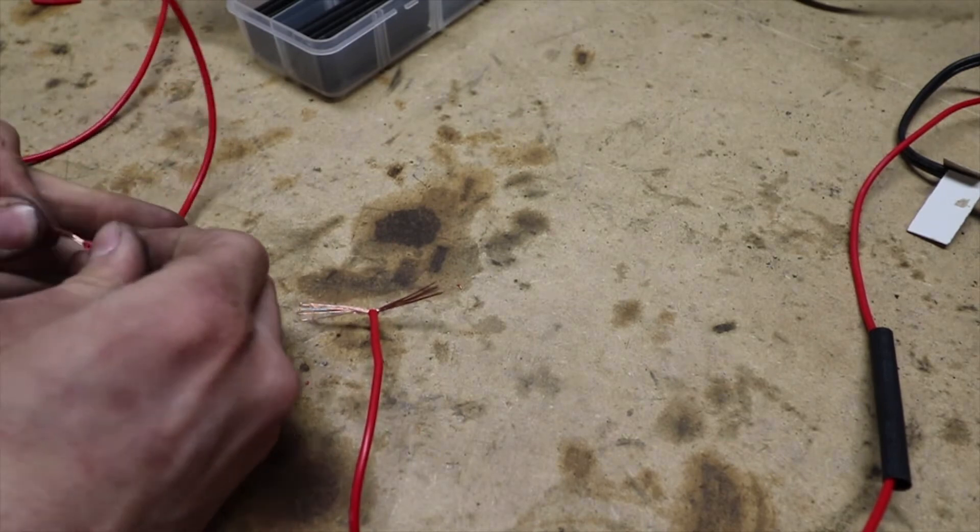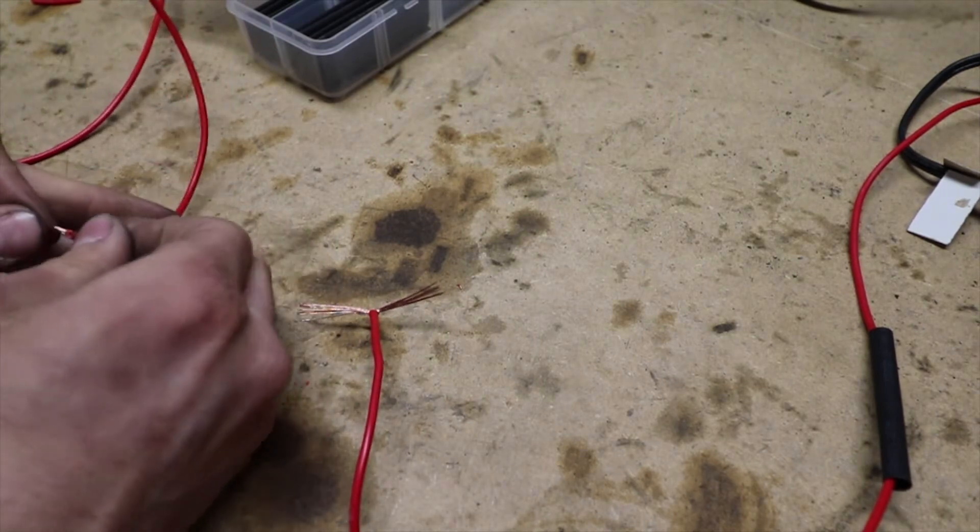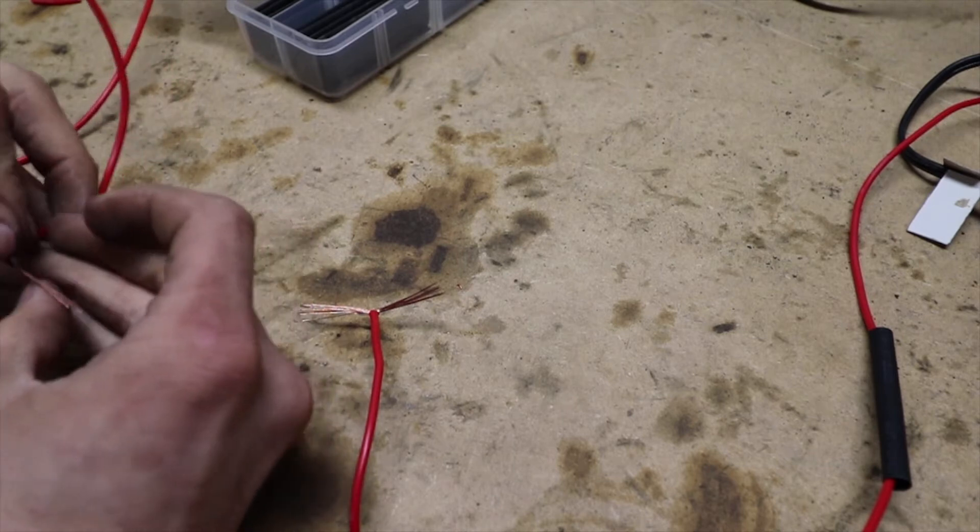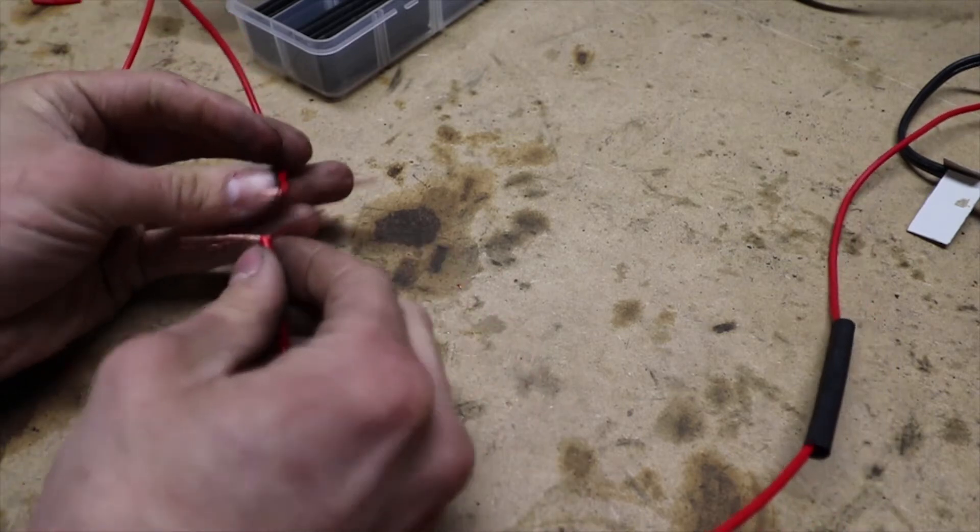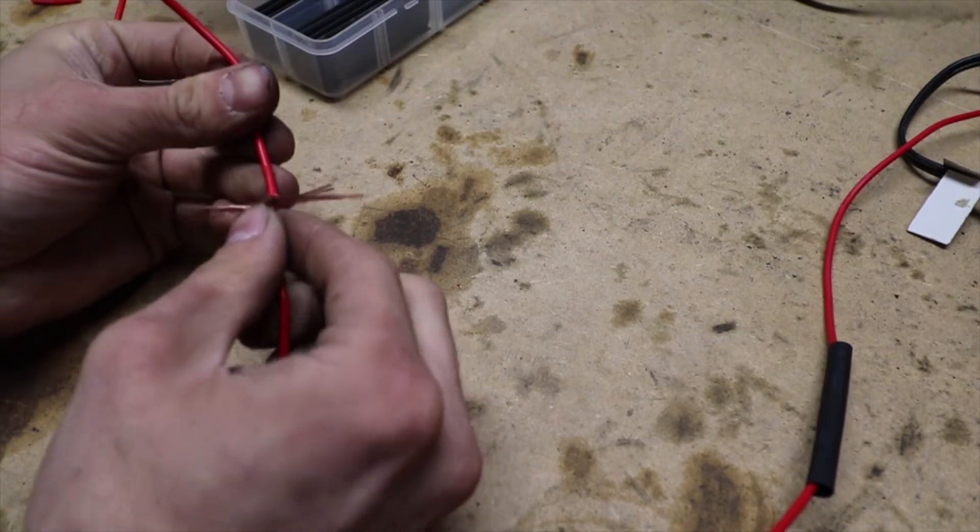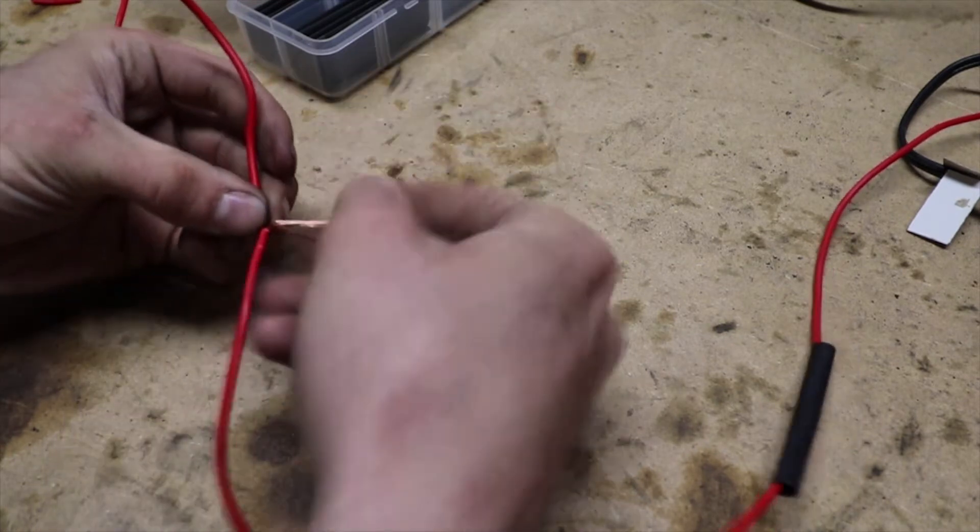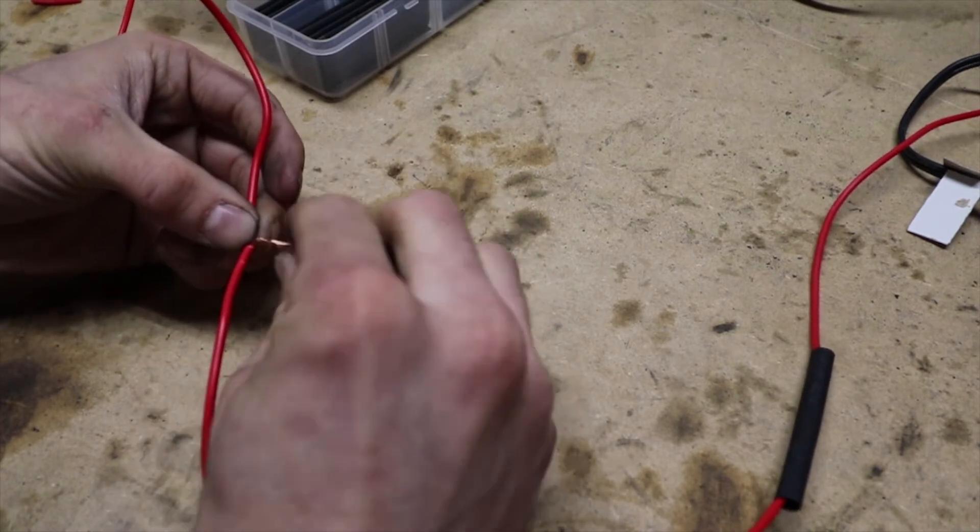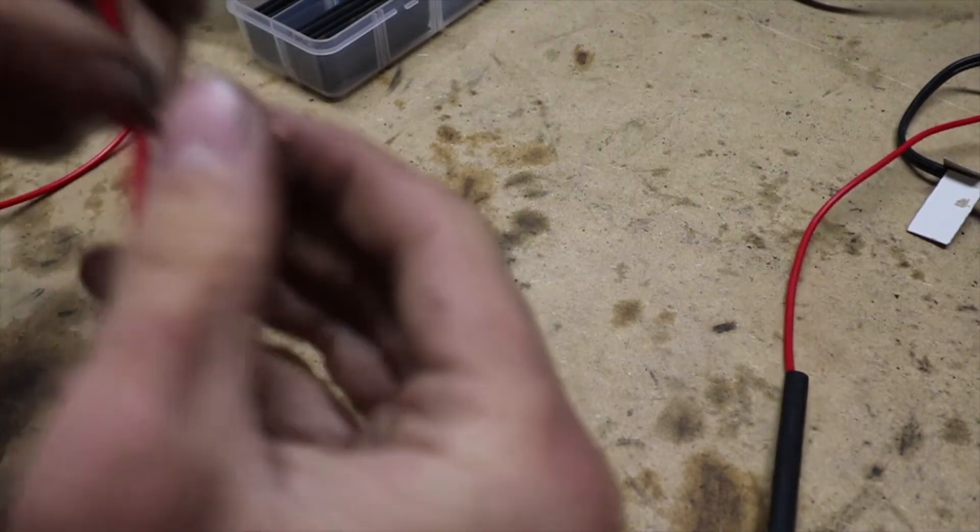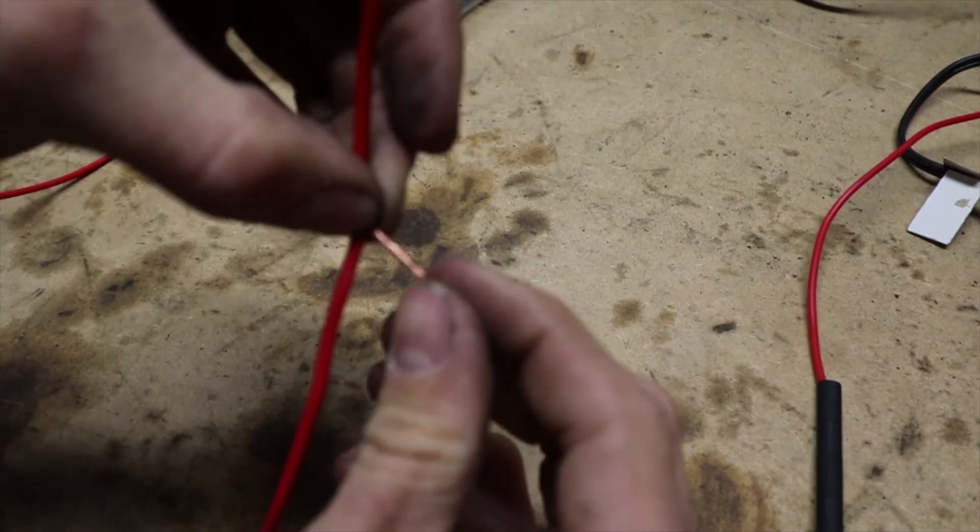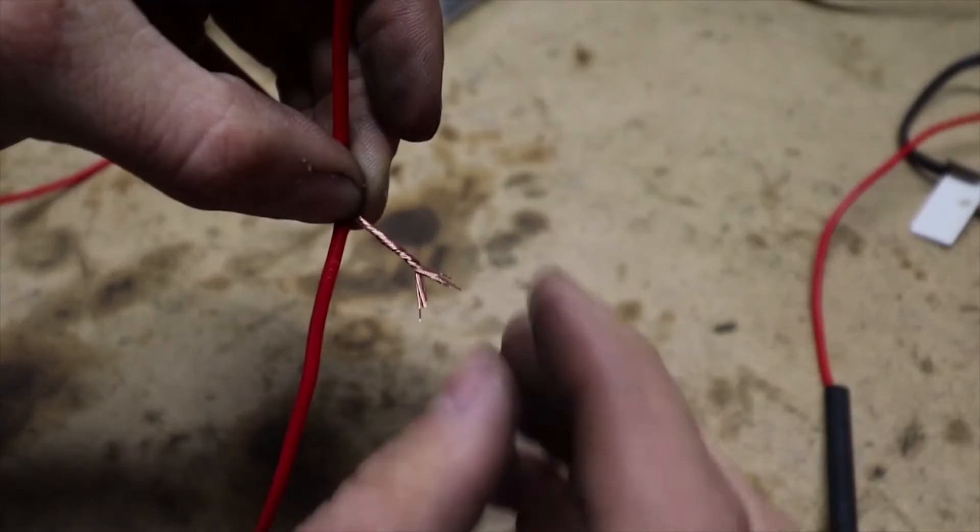Now this is similar to a lineman's splice except it adds a single layer of redundancy. So you take these two T's, you're going to lay them onto each other and then you're going to twist them together. Make sure that it's a nice tight twist. There we go.